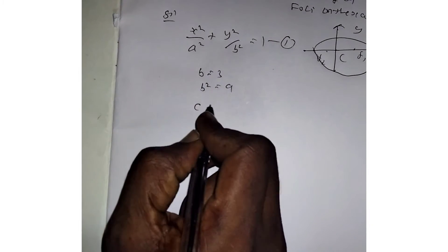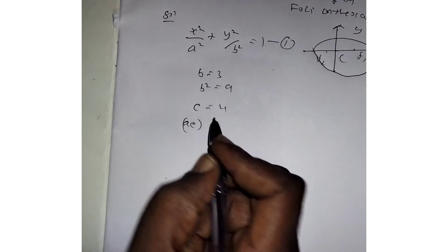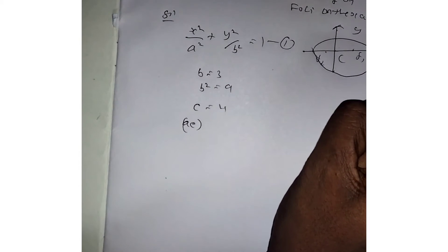Now we're given c equals 4. C means ae. Instead of ae, they give us c. The focus is written as ae comma 0, or c comma 0.